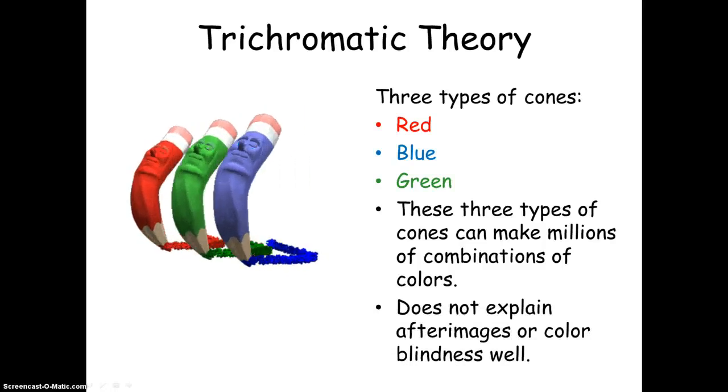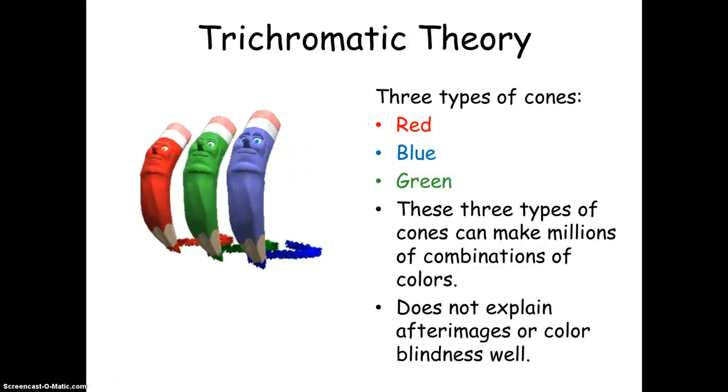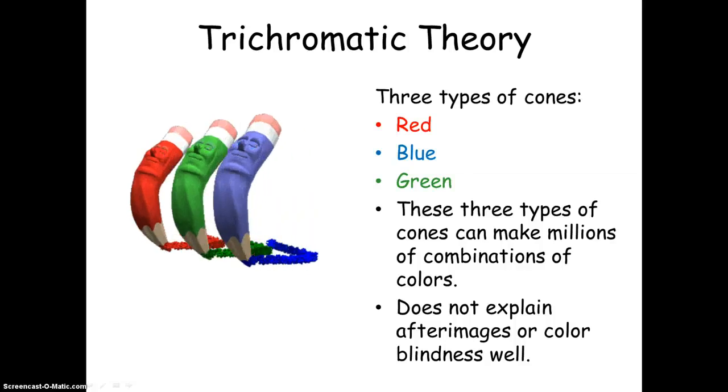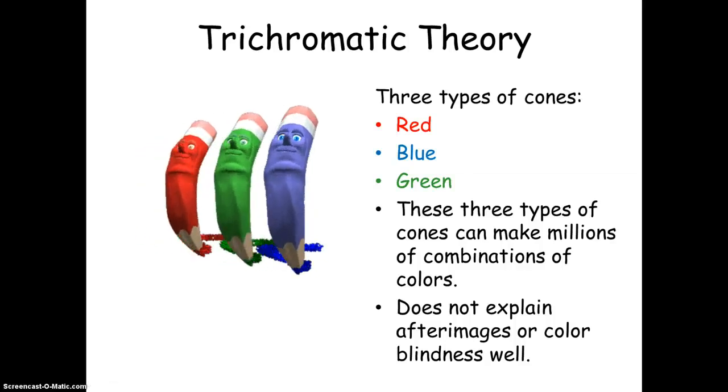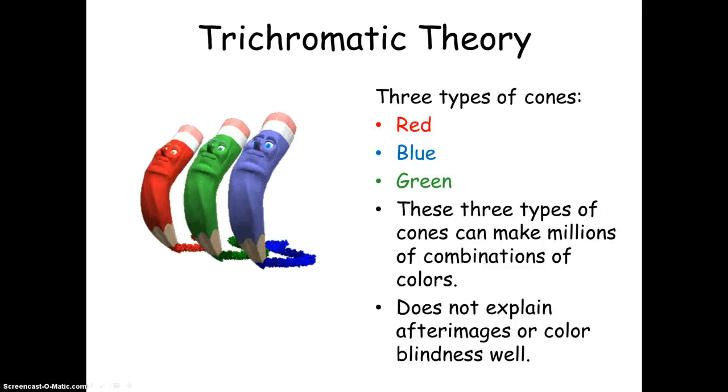This theory, the trichromatic theory, is actually the older of the two theories, and it's a good one for how we see color. The problem is it doesn't explain the afterimages or colorblindness very well. So the prior theory, the opponent process theory, helps to explain those.